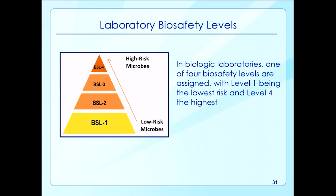In biologic laboratories, one of four biosafety levels is assigned, with level one being the lowest and level four the highest. Level selection depends on different factors, including how the organisms spread among persons — for example, by air, water, or person-to-person contact. As the risks associated with the microbe increase, the assigned level increases. A virus that spreads by air requires complicated handling in a laboratory, and if no vaccine or effective treatment exists, a high biosafety level is required. However, an organism that does not cause severe disease only requires a low biosafety level.